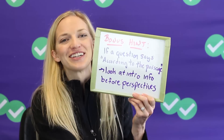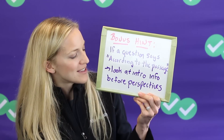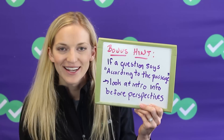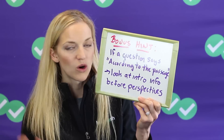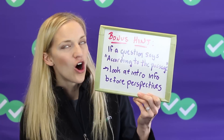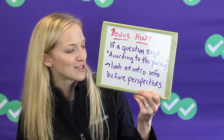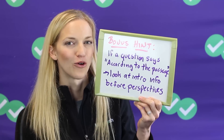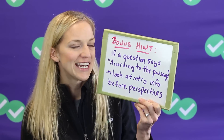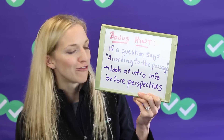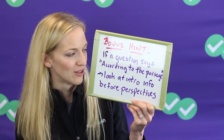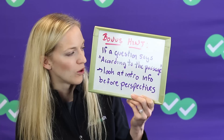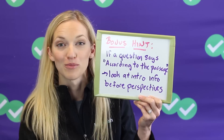Now, one more bonus hint for the conflicting viewpoints passage. If a question says "according to the passage" — as opposed to "according to scientist one" or "according to scientist two" — that almost always means the answer is going to be in the introductory info that appears before the perspectives. So if you're really running out of time or you're not sure where to look and you see a question that says "according to the passage," it's probably just in that short little intro part before the perspectives.